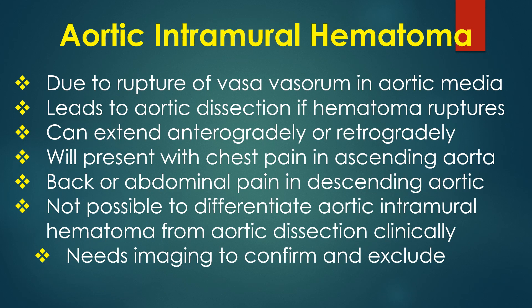Aortic intramural hematoma is usually the result of rupture of a vasa vasorum in the aortic media. It can lead on to dissection if the hematoma ruptures. Just like aortic dissection, hematoma can extend along the length of the aorta either anterogradely or retrogradely. Ascending aortic hematoma presents with chest pain, while descending aortic hematoma may present with back or abdominal pain. It is not possible to differentiate aortic hematoma from aortic dissection clinically, as imaging is needed to confirm and exclude dissection.